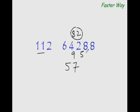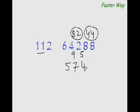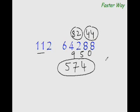Our new dividend would be 58 minus 2 times 7, that is 14. So 58 minus 14 is 44. How many times does 11 go into 44? 11 times 4 is 44, so the remainder is 0. Our new dividend would be 08, that is 8, minus 2 times 4, which is 8. So 8 minus 8 is 0, and you know this is your answer.